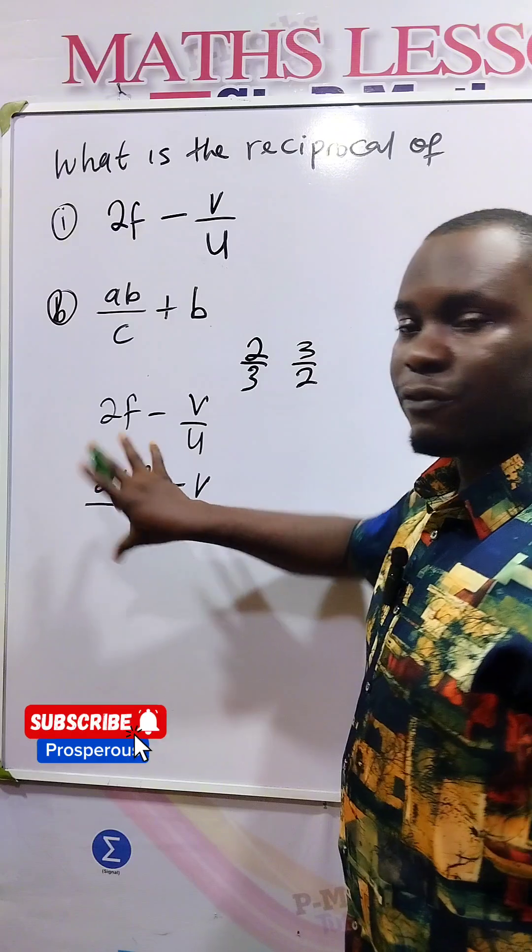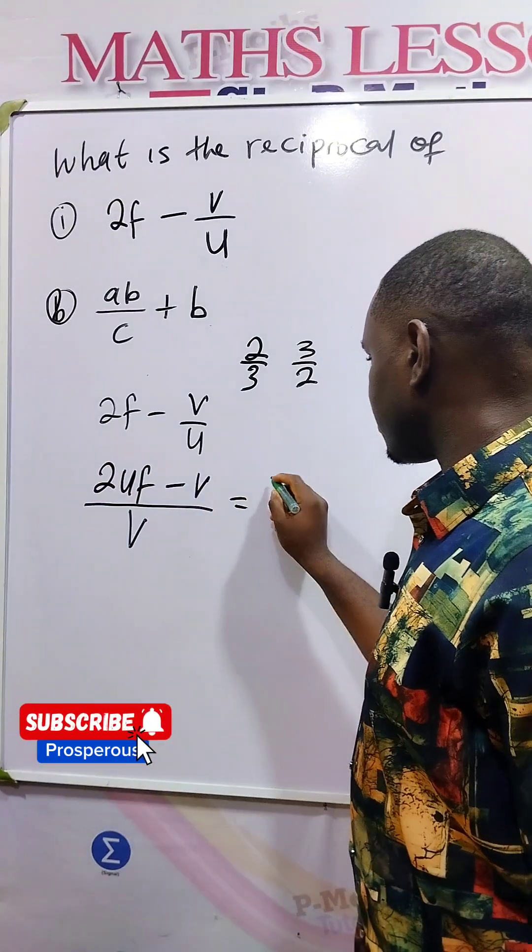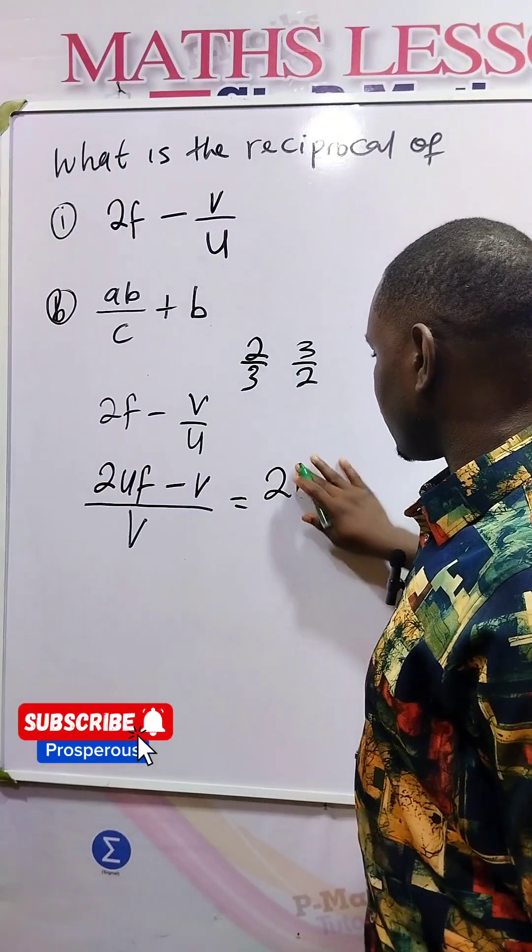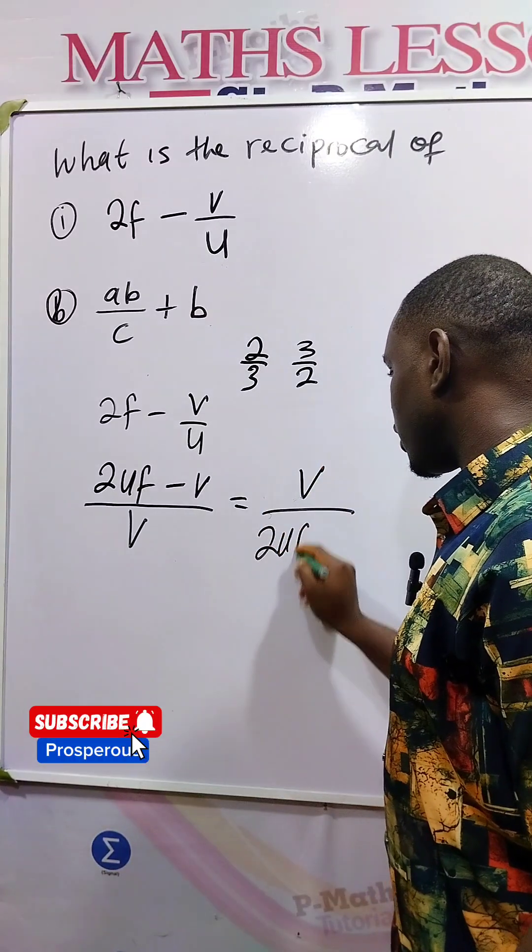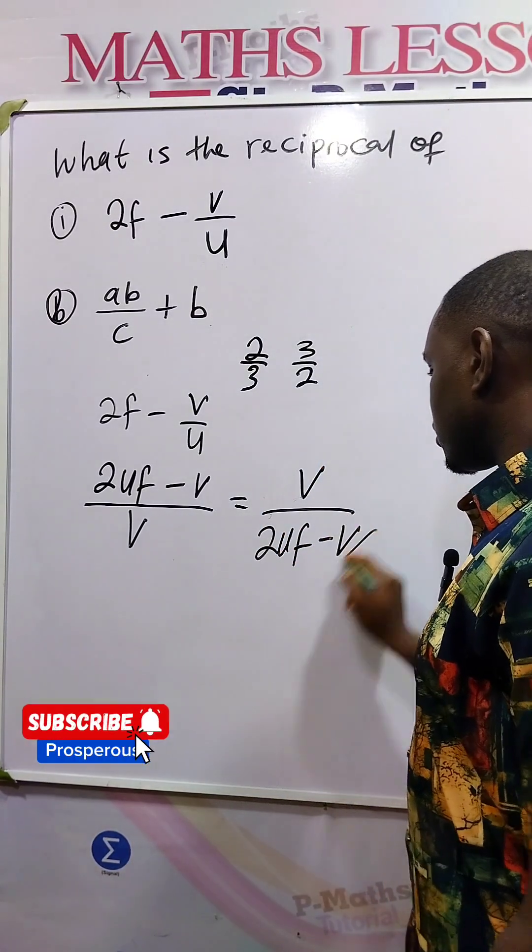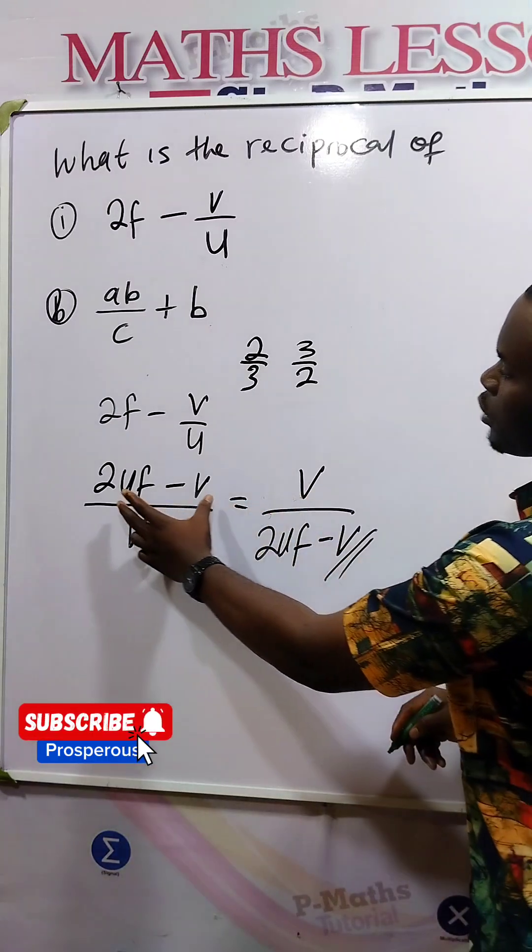So to find the reciprocal, we now flip it. That will give us V over 2UF minus V. So this is the reciprocal of this.